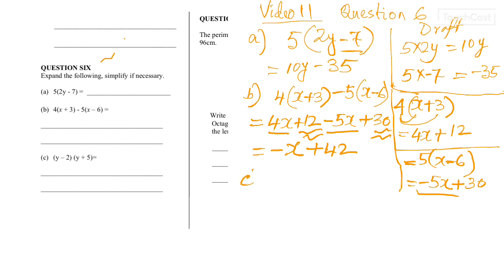The last one before I finish the video for this section. y minus 2 times y plus 5. Double brackets. So, it's going to give me quadratics. Right. So, you can follow the FOIL.